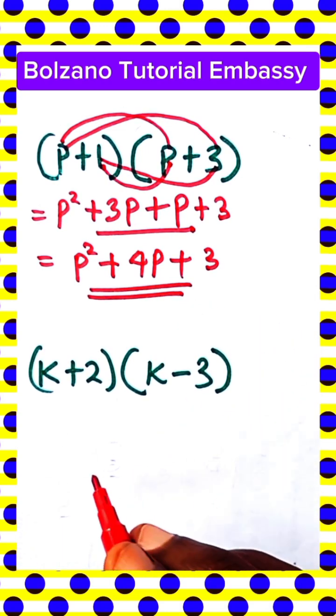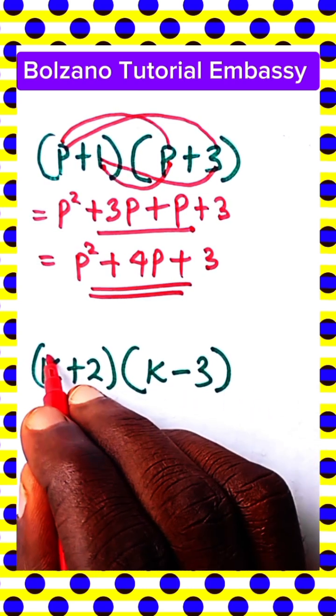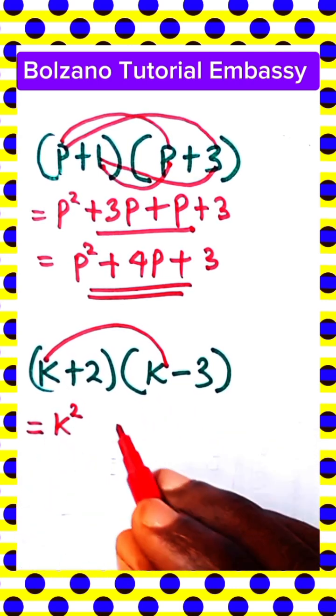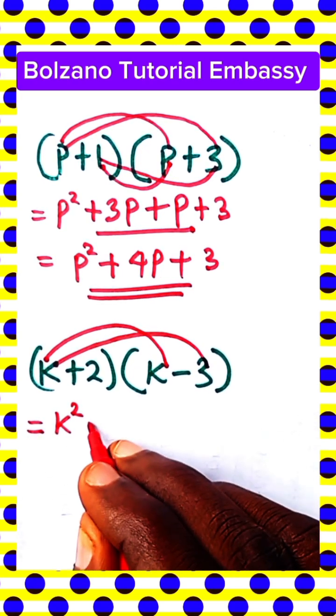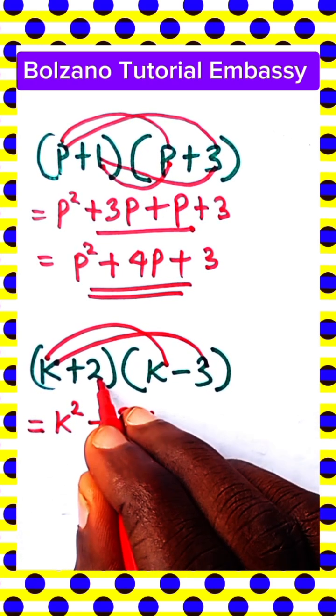Then the next one, K plus 2 times K minus 3. K times K is equal to K squared, K times minus 3, it's minus 3K, then we use the next.